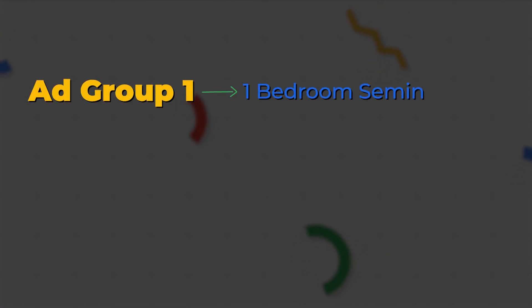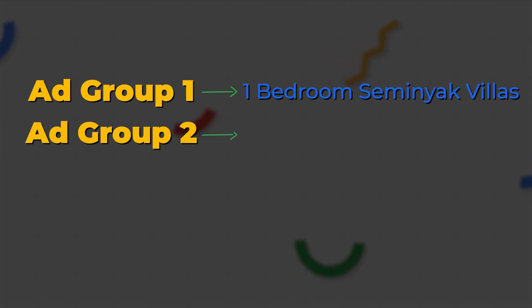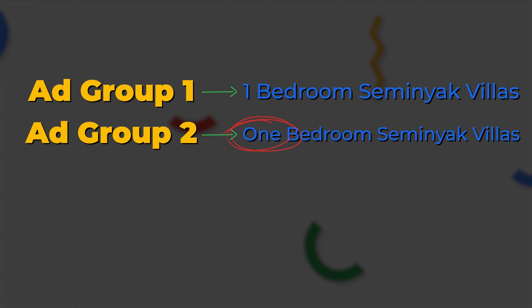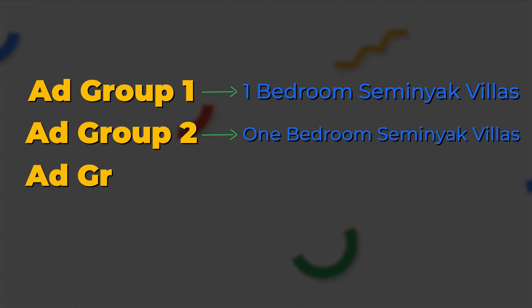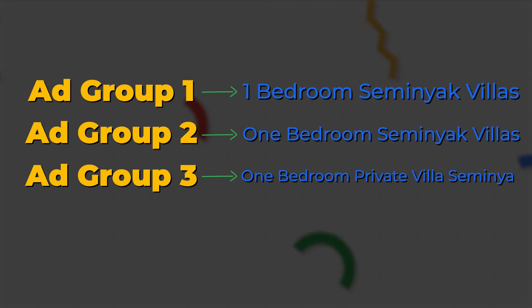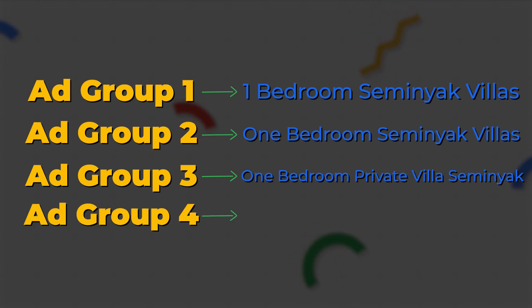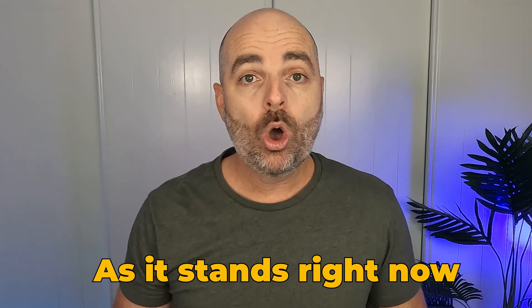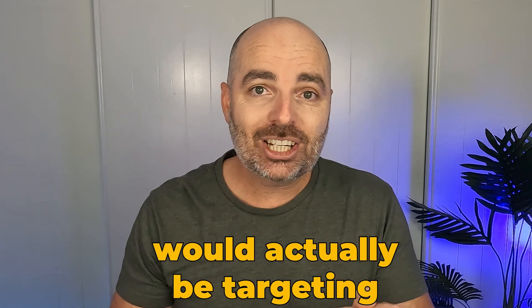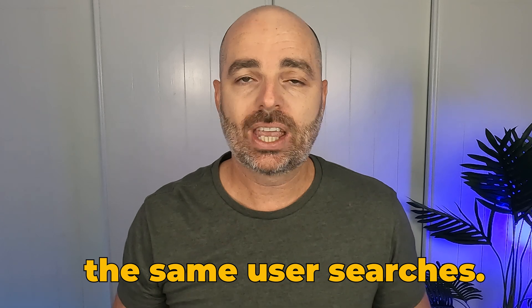To illustrate single keyword ad groups: if you had keywords targeting a villa resort in Bali, you would have one ad group for 'one bedroom Seminyak Villas', a second for the same but spelled out instead of using the number, a third variation, and potentially a fourth for 'one bedroom private pool villas Seminyak'. But with Google targeting meaning rather than exact keywords, all of those individual ad groups would actually be targeting the same user searches.